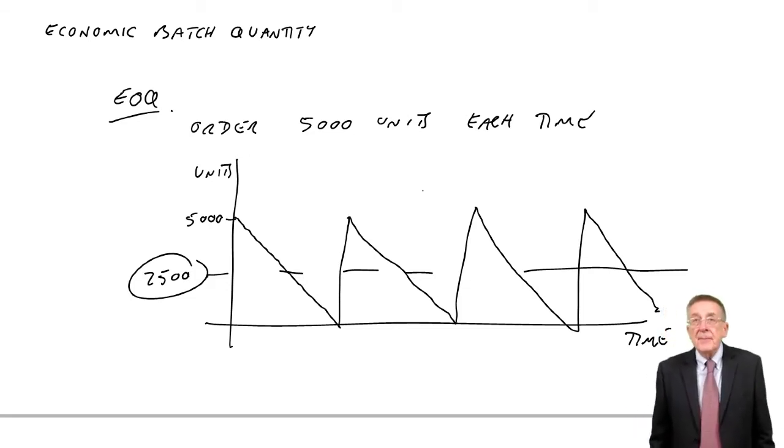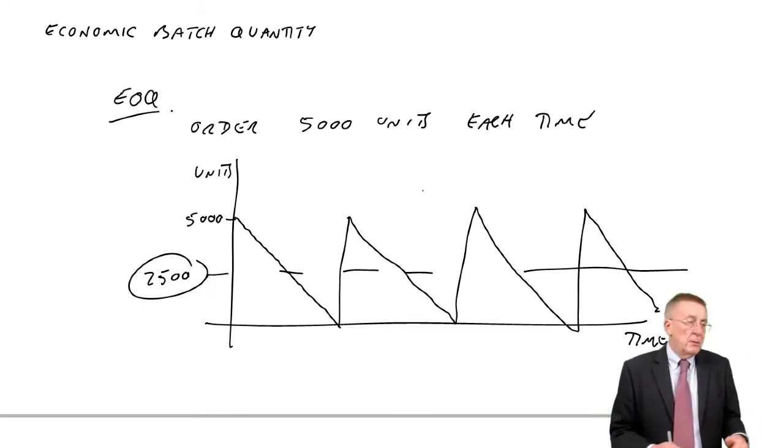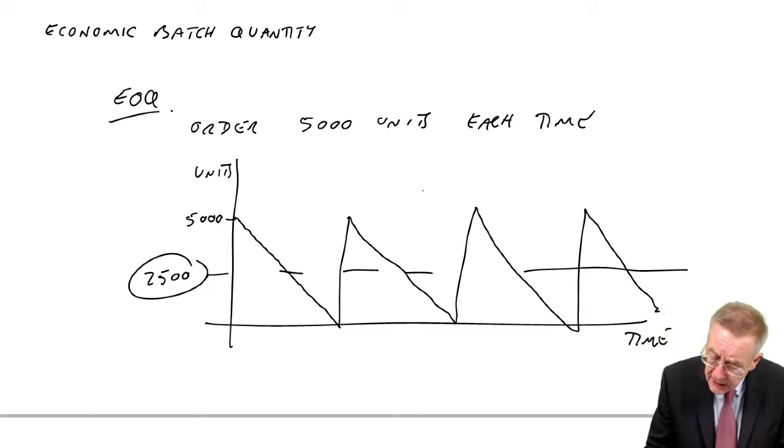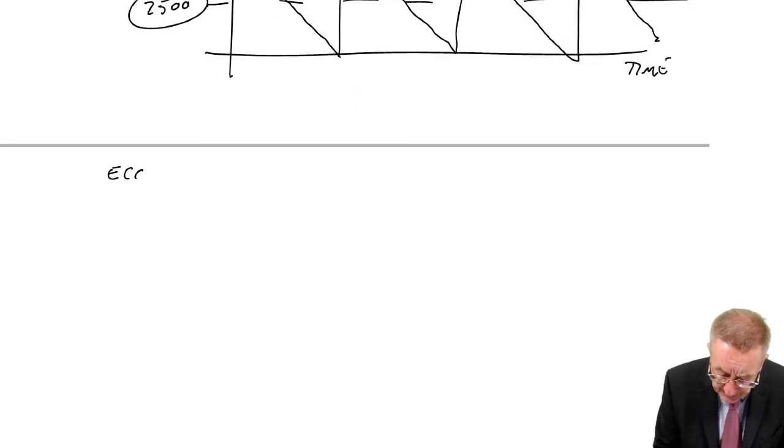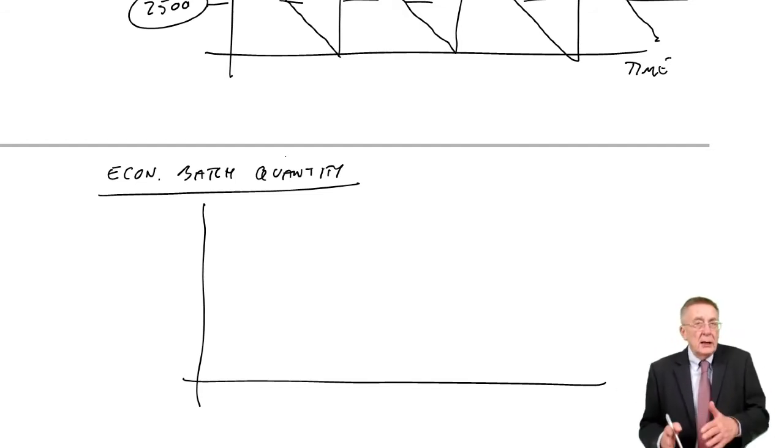But economic batch quantity, same sort of idea, except we're ordering from our factory. Maybe we have a factory where we actually produce the goods, and we send them to the shop, and that's where we sell them. The factory can't produce them just like that. It takes them a few days to make them.